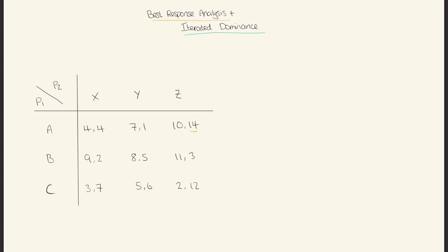We keep doing that for options B and C as well, remembering to ignore the payoffs of player one and only compare the payoffs that player two gets. For option B, ignoring the first number in every cell and comparing the second values, five is the highest because five is more than two and more than three. For option C, comparing the second digits, twelve is the highest because twelve is more than six and more than seven.